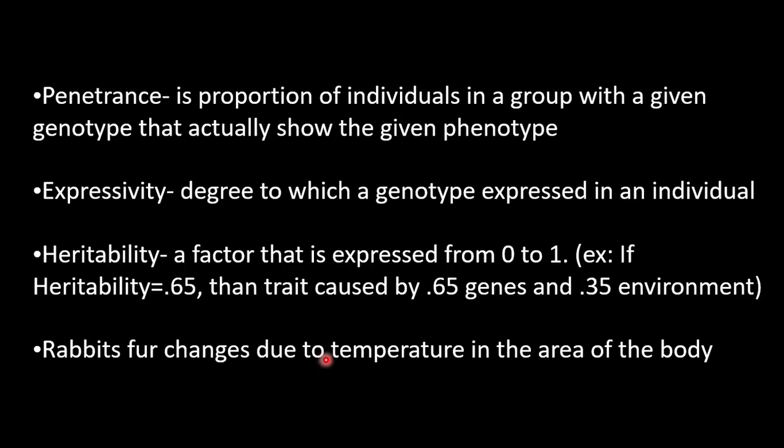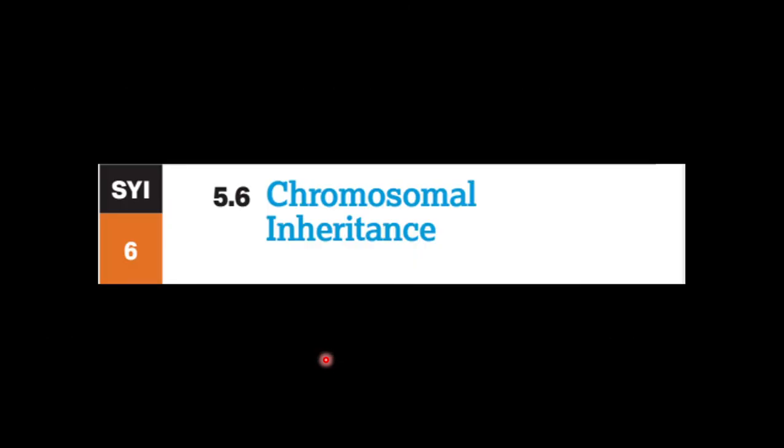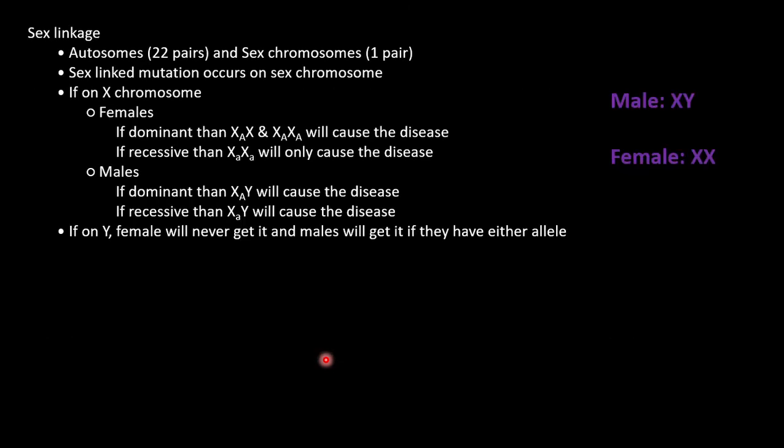We're almost there. Now we are on to environmental effects on phenotypes. Penetrance is a portion of individuals in a group with a given genotype that actually show the given phenotype, such as a disease. Much of the population may have the genotype for a disease but only a select sample will actually get the disease. Expressivity is the degree to which a genotype is expressed in an individual. Heritability is a factor that is expressed from zero to one, showing how much of the trait is controlled by genetics and environment. For example, if heritability is 0.65, then the trait is caused 65% by genes and 35% by the environment. Rabbits' fur is a good example because it changes due to the temperature in specific areas of the body.